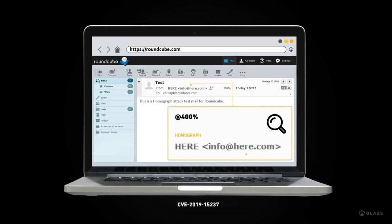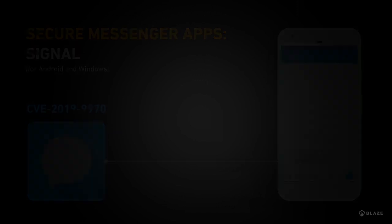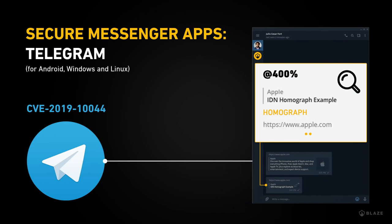Signal was also assigned a CVE earlier this year. Both Android and Windows versions of Signal were vulnerable — there was no visual way to tell the fake URL from the real one. Signal for iOS made homographed links unclickable, which was effective, but other versions were vulnerable. Telegram had the same issue and even went as far as generating a website preview using the fake domain, making it possible to pull off very convincing phishing attacks.